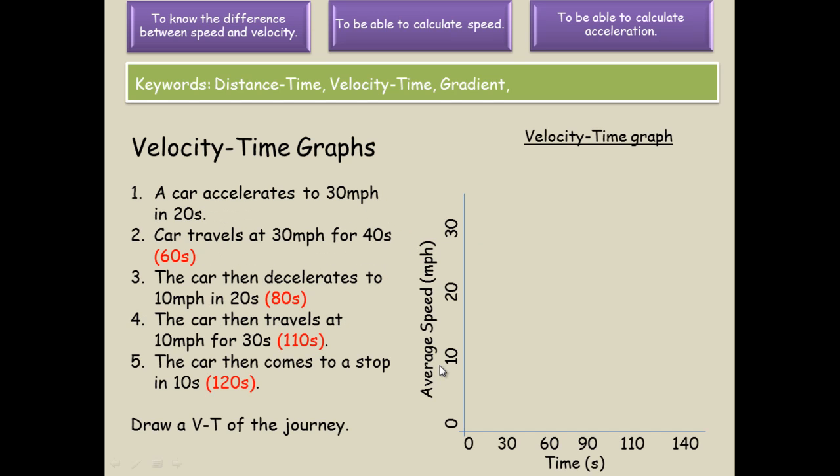This is what the graph will look like. In the first instance, the car accelerates to 30 miles an hour. If we draw a line between those two points, 0 to 30, the car continues to travel at 30 miles an hour for a further 40 seconds. The car then decelerates to 10 miles an hour in 30 seconds. It then continues to travel at 10 for another 30 seconds. Finally, it comes to a stop in 10 seconds.